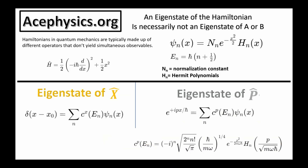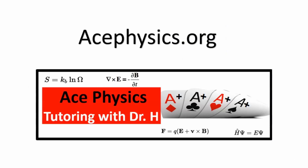The matrix mechanics and wave mechanics are exactly the same thing, and they still involve the uncertainty principle. It all comes down to linear combinations of the eigenstates of the Hamiltonian, where the Hamiltonian is made out of combinations of different Hermitian operators that don't commute with each other. For more math and physics tutoring, visit AcePhysics.org.